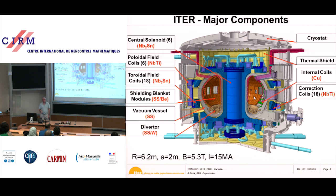Thoroughly symmetric. The brown blocks you see are the blocks that shield the machine from the plasma — the neutrons. They capture most of the neutrons.